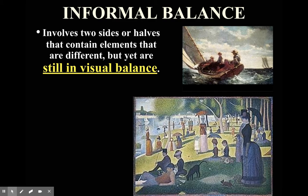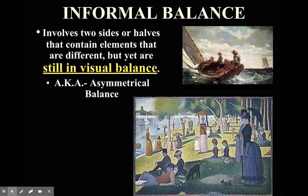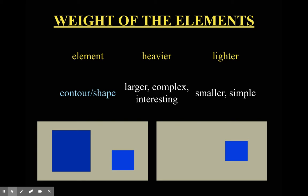Next is informal balance, which involves two sides or halves that contain elements that are different but still in visual balance. For example, in the painting of the boat, there's a small ship on the far right to counterbalance the large dark boat on the left. Another term for informal balance is asymmetrical balance — symmetrical for formal, asymmetrical for informal.